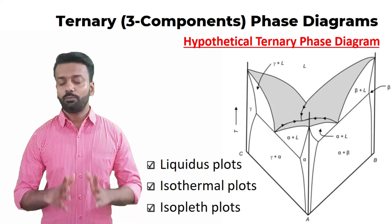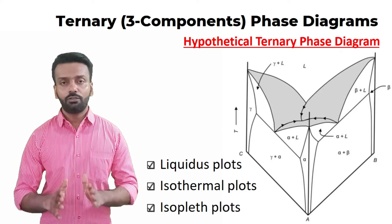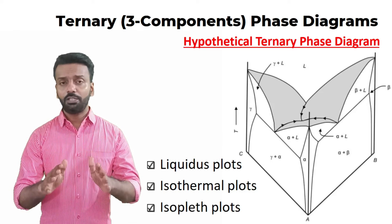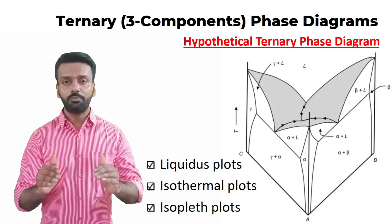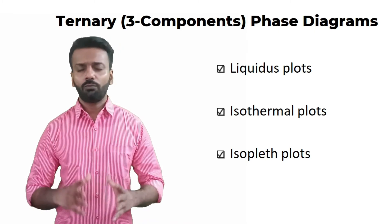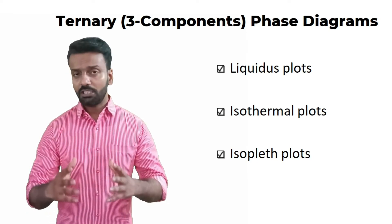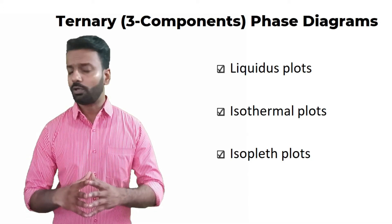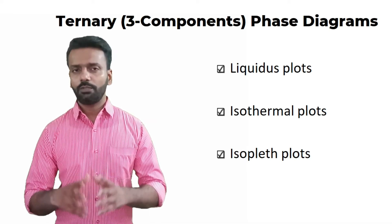This is a hypothetical ternary phase diagram of three components A, B, and C. The three components are at the corners of the image and temperature is on the vertical y-axis. The darker region of the image represents that the entire phase is liquid at that point, and as you reduce the temperature the material changes phase and goes into a solid phase. Because ternary phase diagrams are complicated and difficult to read, they are plotted in three different types of plots: liquidus plots, isothermal plots, and isoplate plots.